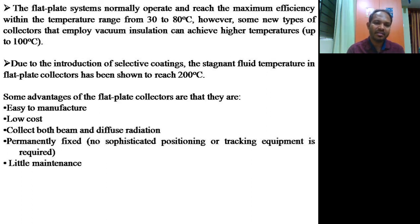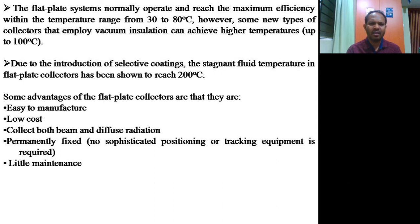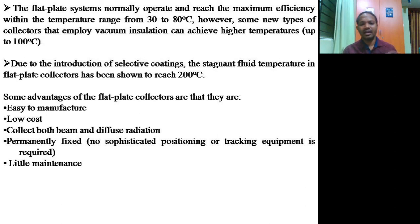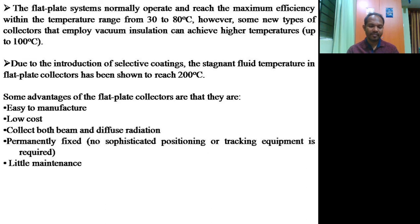Some of the major advantages of flat plate collectors are: they are easy to manufacture, low cost, they collect both beam and diffuse radiation, they are permanently fixed with no sophisticated positioning or tracking equipment required — tracking equipment is required only for concentrating collectors — and they require very little maintenance.